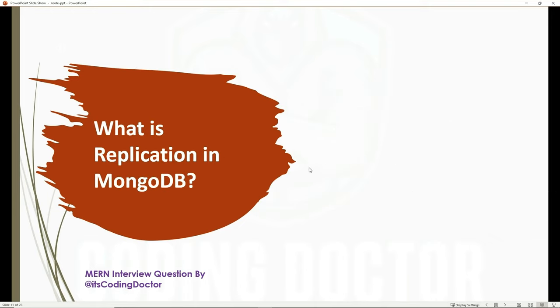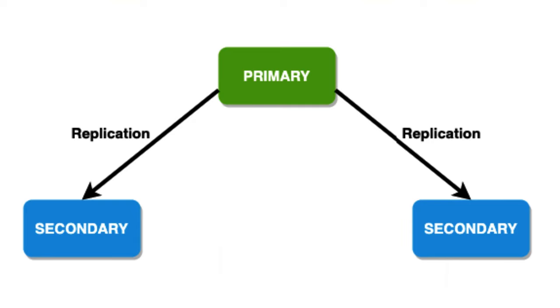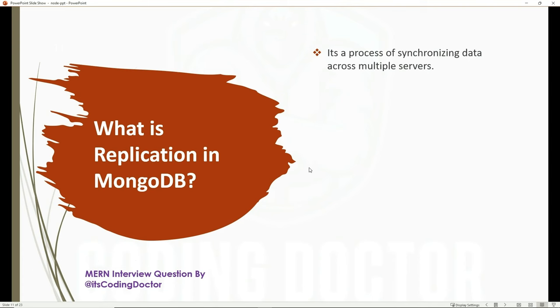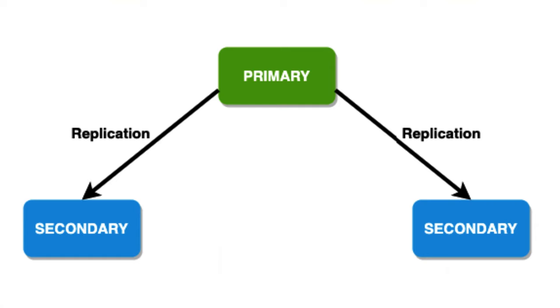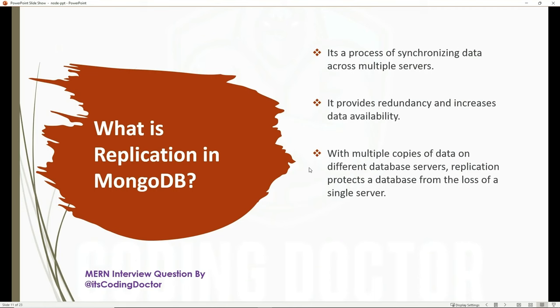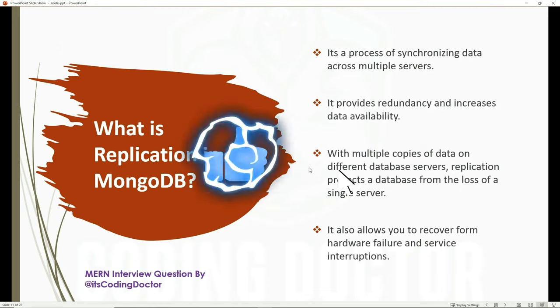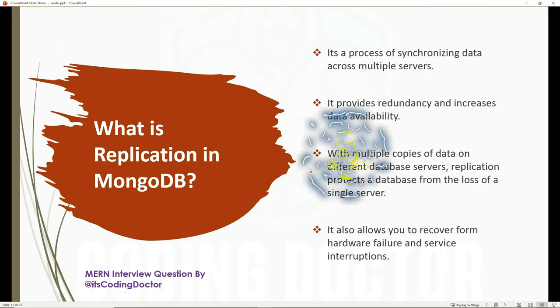The next question is: what is replication in MongoDB? Replication is the process of synchronizing data across multiple servers. It provides redundancy and increases data availability. With multiple copies of data on different database servers, replication protects a database from loss of a single server. It also allows you to recover from hardware failures and service interruptions, because you are not totally dependent on a single server.